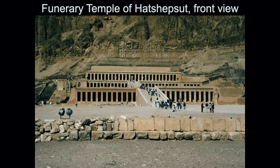Hatshepsut referred to her temple as the 'splendor of splendors.' She claimed she deserved to be pharaoh because her father willed it so — and this is where the power struggle comes in. Thutmose II had a child, Thutmose III, who thought he should be pharaoh, but Hatshepsut said her father declared she was supposed to be the next pharaoh. There's no evidence of this in any written records. Nonetheless, this temple she built is a symbol of the success of her diplomacy and her power as pharaoh.